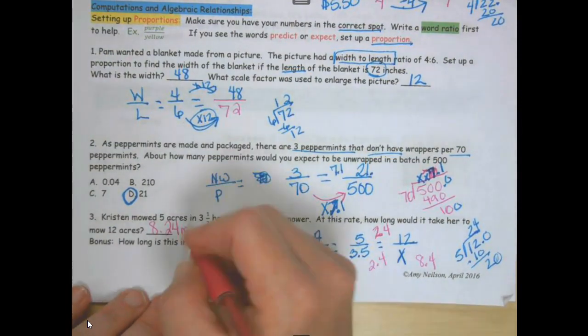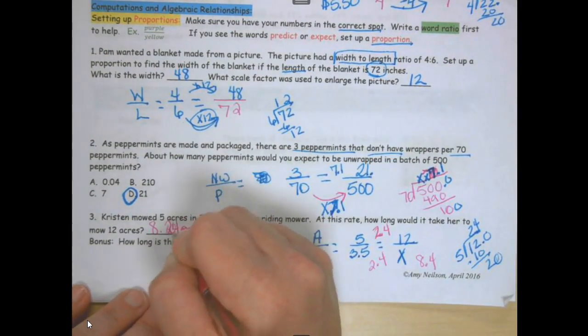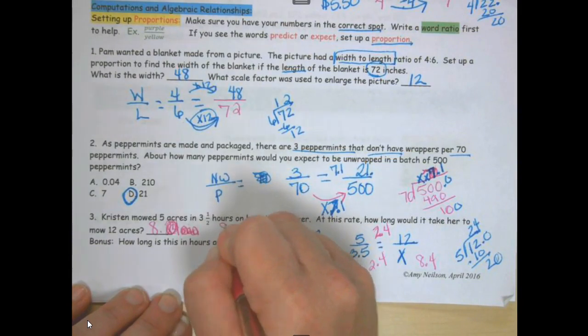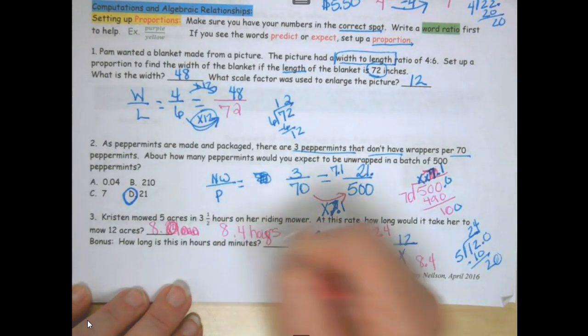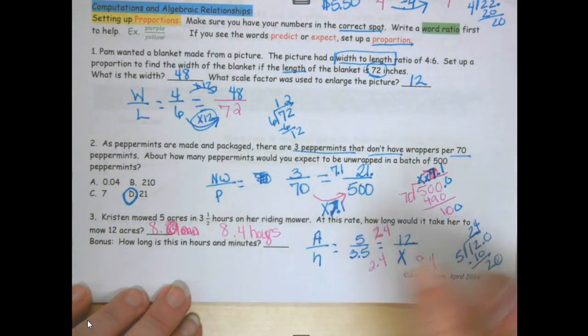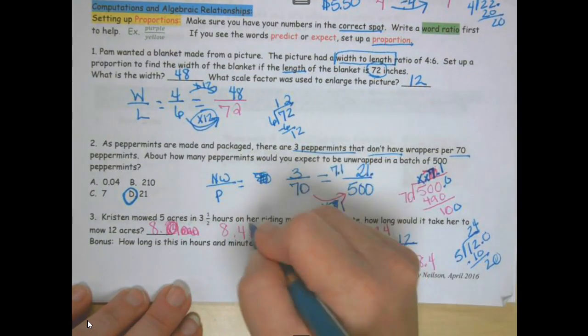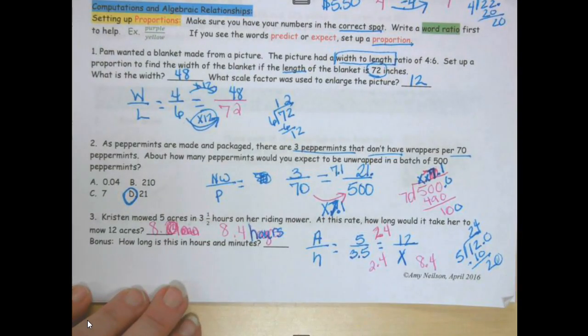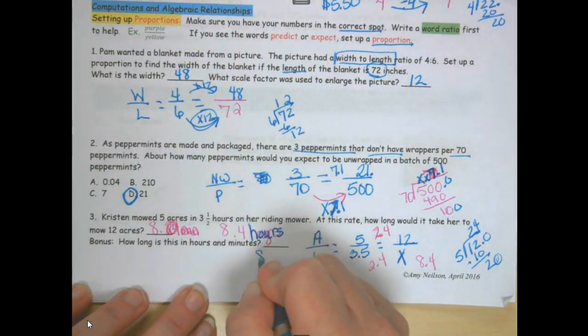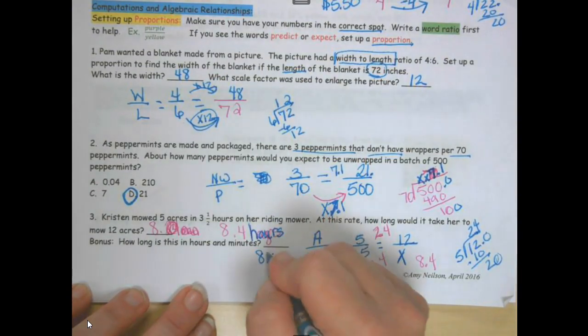So 8.4. So this is 8 hours and 0.4 of an hour is 24 minutes. 8.4 hours. How many minutes is this? This would be 8 hours and 24 minutes.